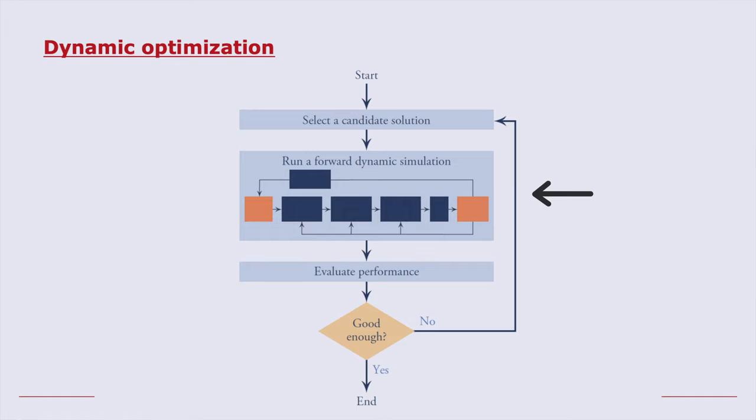You'll notice that within this loop, we're running a dynamic simulation. So this allows us to include in our objective function, when we evaluate the performance, we can include things like metabolic cost, jump height, jump distance, things like that.